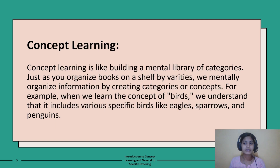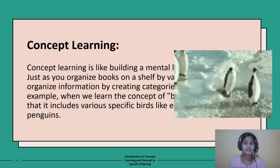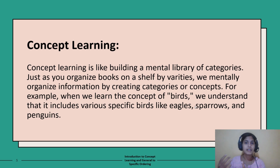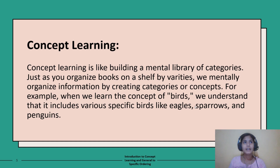Concept learning is like building a mental library of categories. Just as we organize books on a shelf by variety, we mentally organize information by creating categories or concepts. For example, when we learn the concept of birds, we understand that it includes various specific birds like eagles, sparrows, and penguins. Let's say you learn about birds at a general level — you put that book into the general category shelf.